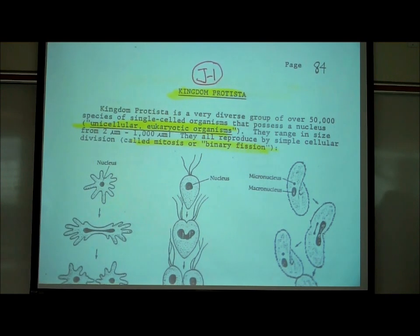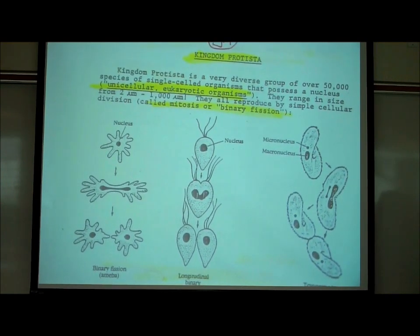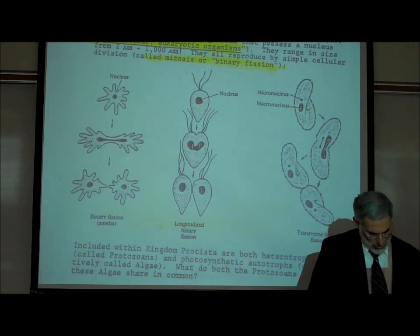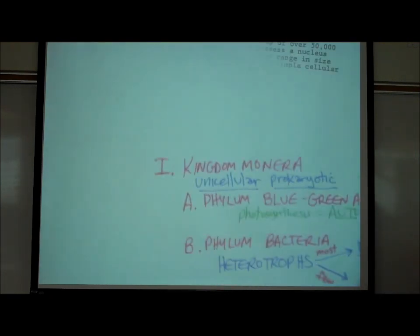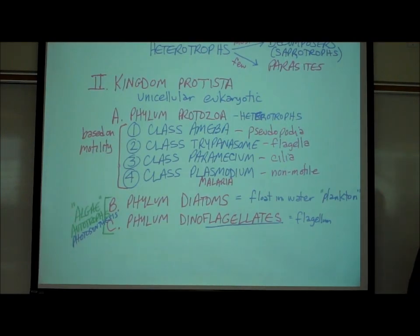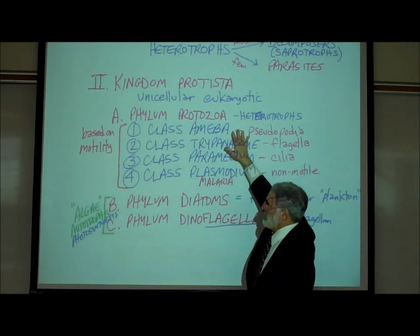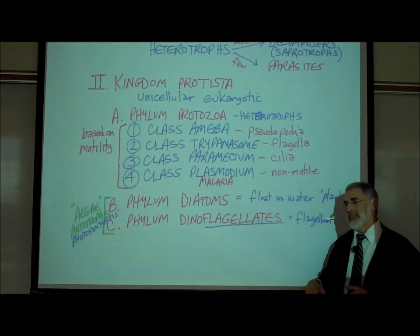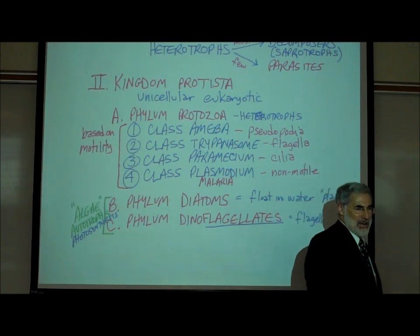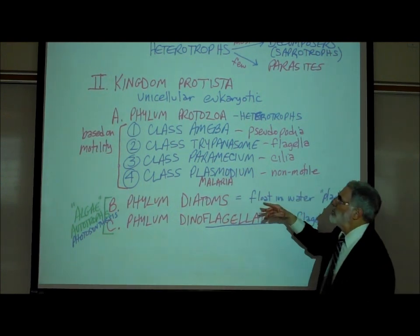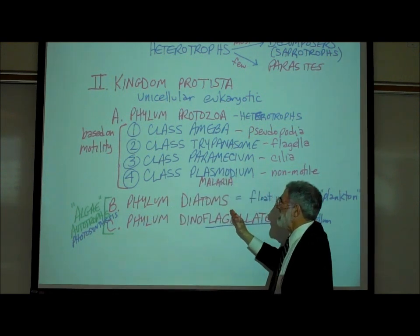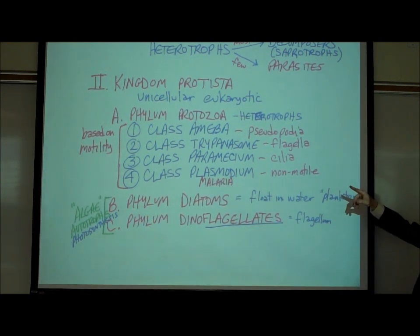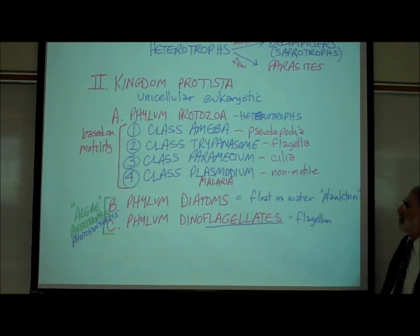The way they reproduce is simply by mitosis or binary fission. We're going to divide Kingdom Protista into a number of phyla. In this simplified scheme, all members of Kingdom Protista are single-celled and possess a nucleus — much larger and more complex cells than those in Kingdom Monera. We'll divide Kingdom Protista into three phyla: phylum Protozoa, phylum Diatoms, and phylum Dinoflagellates. Phylum Protozoa will be further subdivided into four classes.